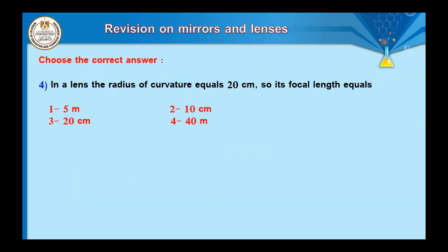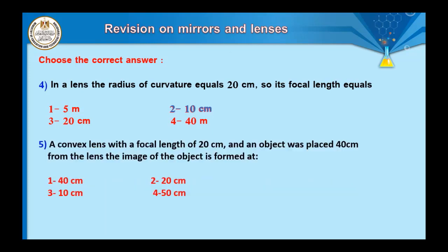Question number four: in a lens, the radius of curvature equals 20 cm. Its focal length equals half the radius: focal length equals half of 20 cm. Question number five: a convex lens with a focal length of 20 cm and an object placed at 40 cm. The object is at distance equal to double the focal length, so the image forms at distance equal to double the focal length — 40 cm — as a real, inverted, and equal-in-size image.